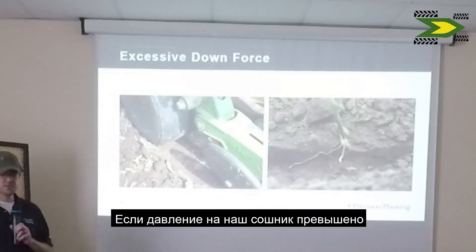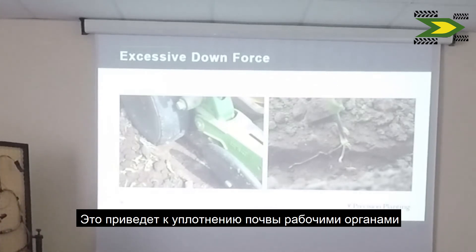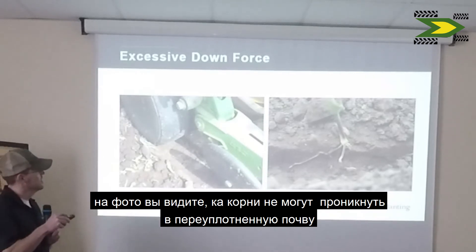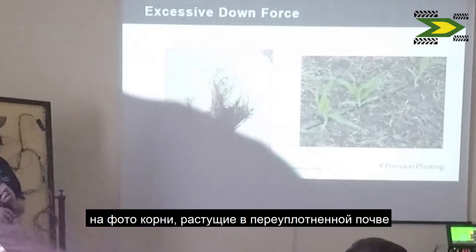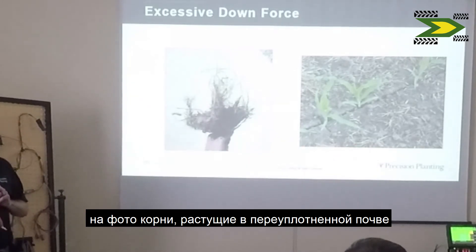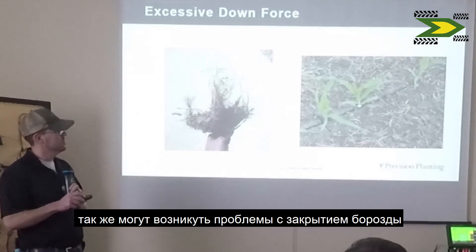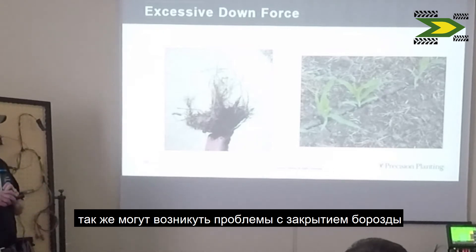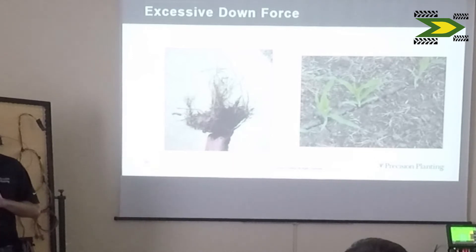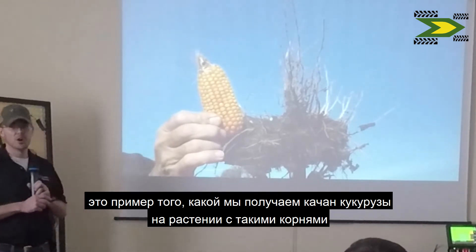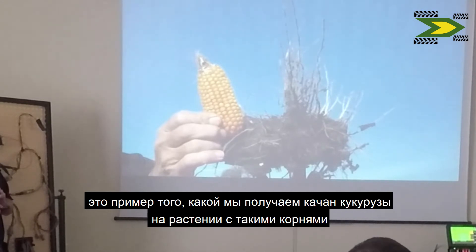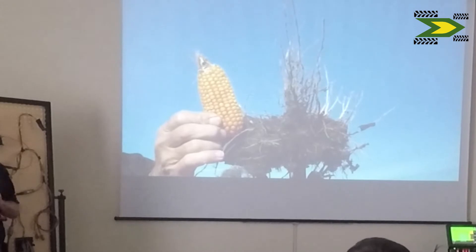If there is too much force pushing down on the row unit, that weight gets carried by the gauge wheels of the planter and can cause compaction. You can see these roots are not able to get out of that seed trench. In areas of compaction, you will also often see slotting later on if the ground dries out and that seed trench cracks back open. Here's an example of an ear that is much smaller than desired because the plant had too much compaction and not a good root system to feed it.